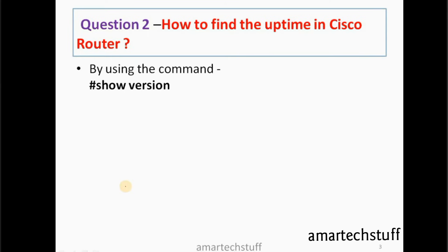Question number two: how to find the uptime in a Cisco router. To find out the uptime in a Cisco router, the command is 'show version'. This command gives us the IOS version present in the router and also the uptime of the router.